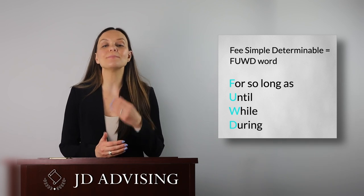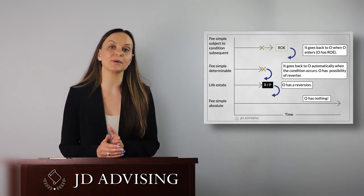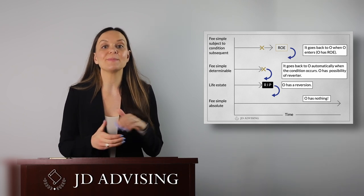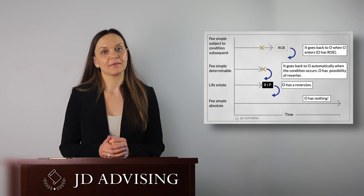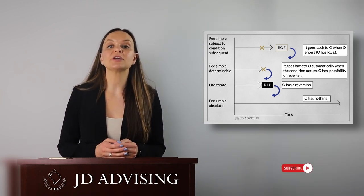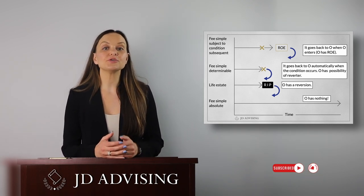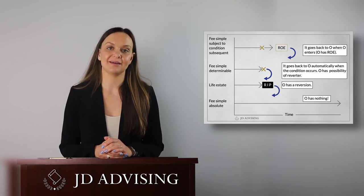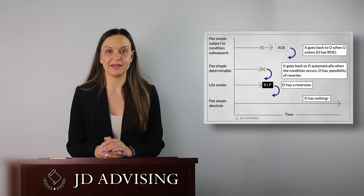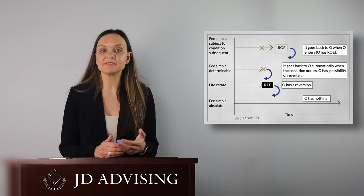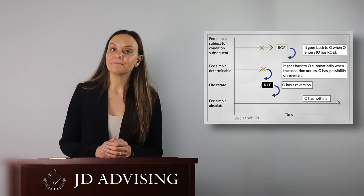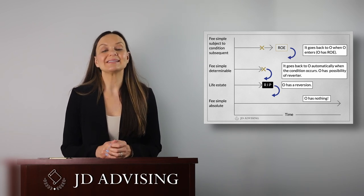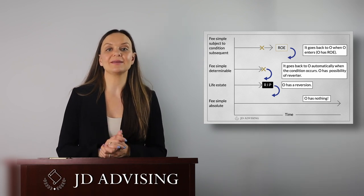To get these types of questions correct, the key is to memorize the language used to create these present interests and their associated future interests. Remember that the future interest that goes with a fee simple subject to a condition subsequent is the right of entry, and the land goes back to O when O enters. The possibility of reverter is the future interest O has when he creates a fee simple determinable — the land goes back to O automatically upon the condition occurring. Reversion is the future interest that goes with a life estate, and O gets the land back when the measuring life dies. When a fee simple absolute is created, O takes or keeps nothing for himself — there is no future interest associated with a fee simple absolute.